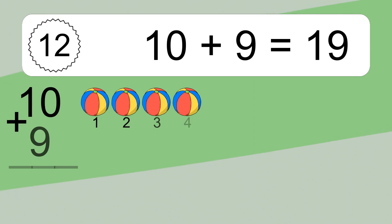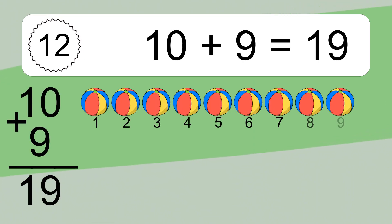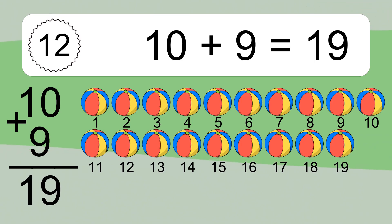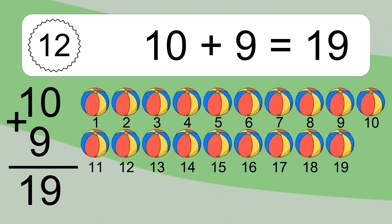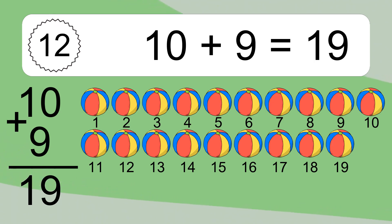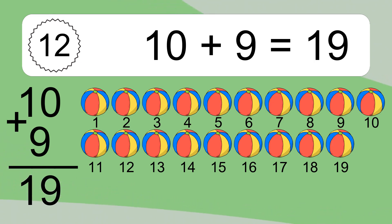Ten plus nine equals nineteen. Let's count it: one, two, three, four, five, six, seven, eight, nine, ten, eleven, twelve, thirteen, fourteen, fifteen, sixteen, seventeen, eighteen, nineteen.